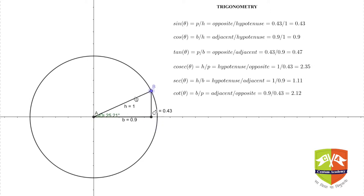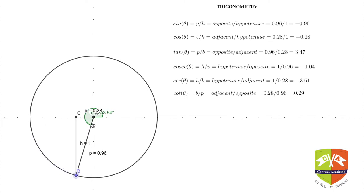You can use this session to understand how θ changes and based on that how the ratios are also changing. Hence, don't think that trigonometry is all about angles less than 90 degrees. There is significant meaning of angles more than 90 degrees as well.